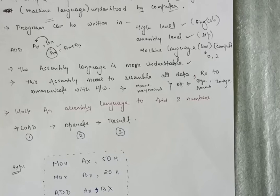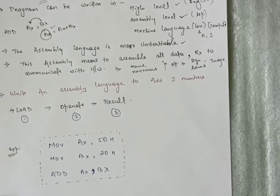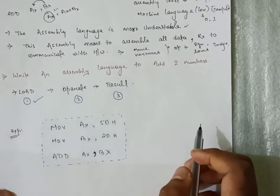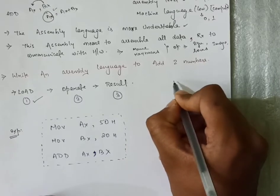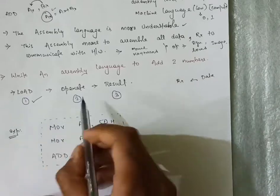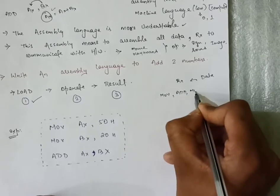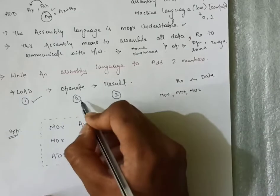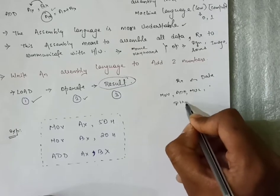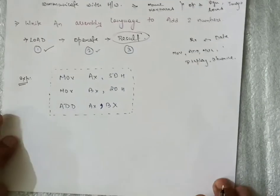We will look at one example of a code in assembly level language: how to perform the addition of two numbers. The basic steps involved: first is loading, whatever register is there, it will get some data. After that, it will operate means some command we are giving - suppose we want to move, add, or multiply. According to the instruction, it is going to operate. And finally, we get the result that will display.